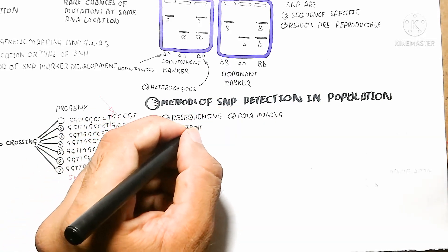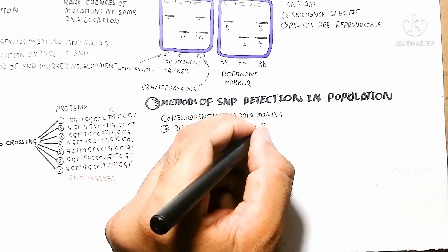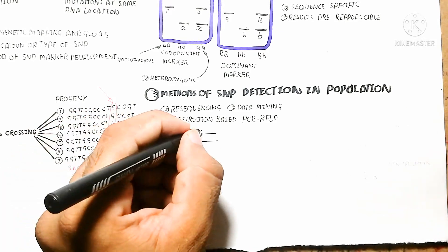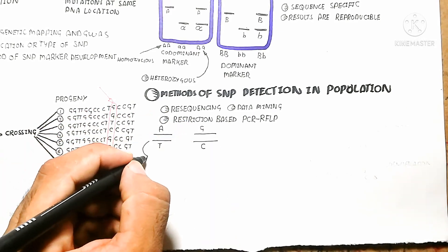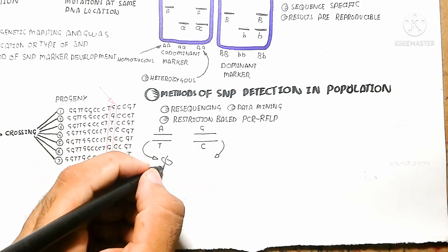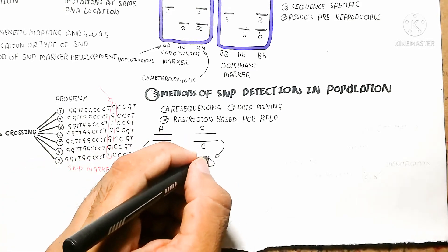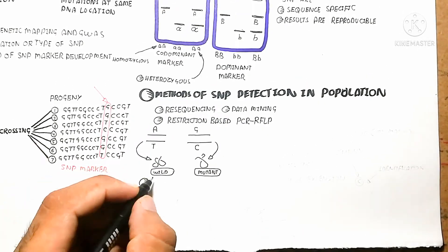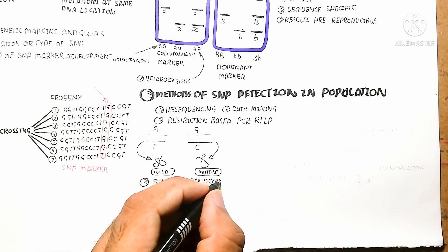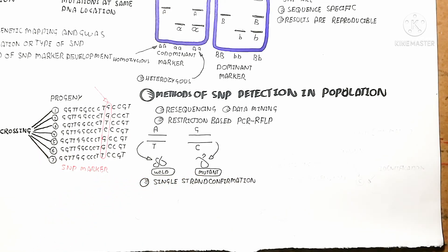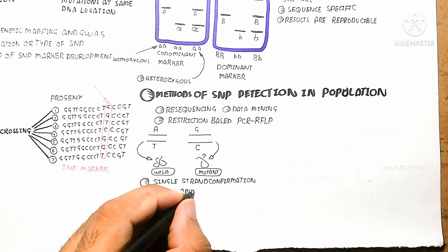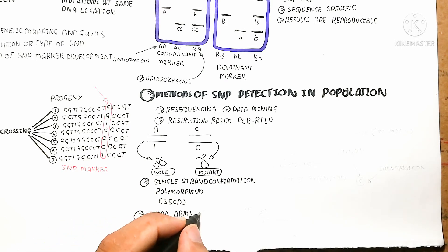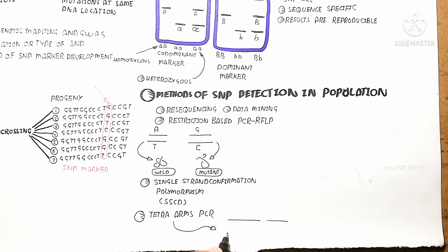For SNP detection methods in the population, approaches include resequencing, data mining, restriction-based PCR, and RFLP — a separate video will be made on these methods. One method is Single Strand Conformation Polymorphism (SSCP), where a single strand contains many nitrogen bases. Adenine-thymine alteration and guanine-cytosine alteration are compared between a wild-type animal and a mutant animal to detect SNP changes.